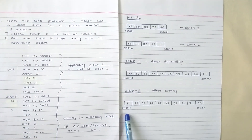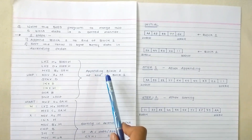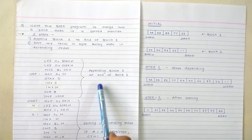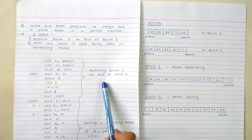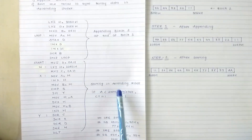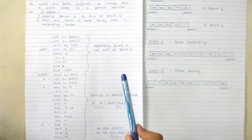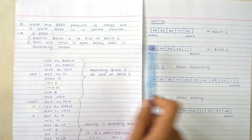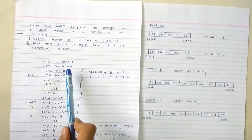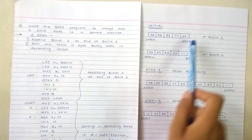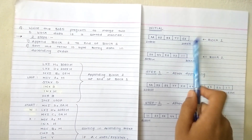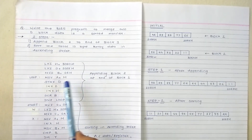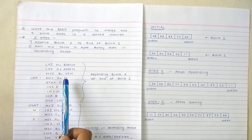Here is the 8085 program. The first step is to append block 2 to the end of block 1, and the second step is sorting. First, we load the source address into the HL pair, the destination address into the DE pair, and load count 5 into register B.